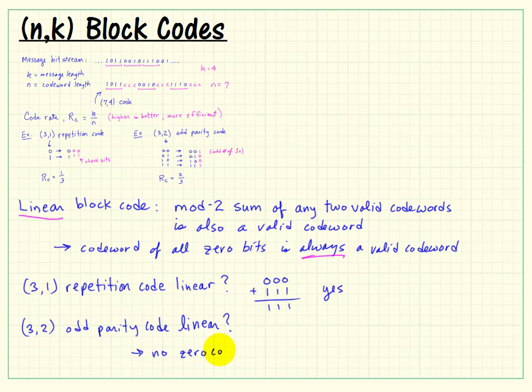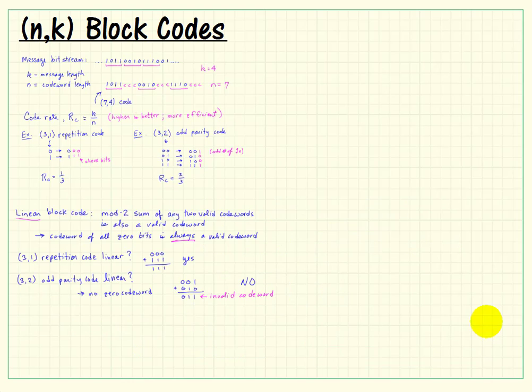How about the odd parity code? Well first of all we observe that there is no zero codeword so that seems to be a giveaway right there. Also if we consider adding this pair of codes notice that we get a result that is not a valid codeword. Because the parity in this case would be said to be even. So the odd parity code is not a linear code.